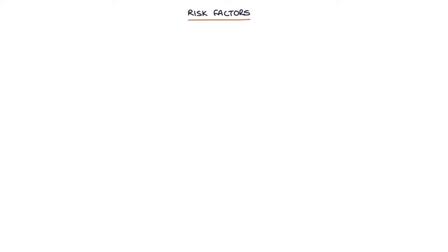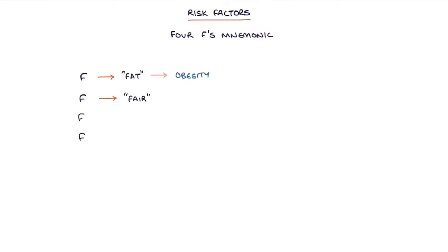Let's talk about the risk factors for gallstones. The four main risk factors can be remembered with the four F's mnemonic: Fat, meaning patients that are obese; Fair, meaning patients with fair hair and fair skin; Female, meaning female patients; and Forty, meaning middle-aged patients.